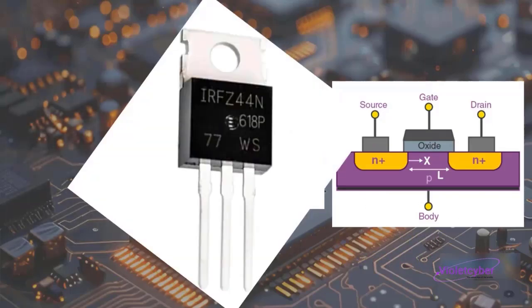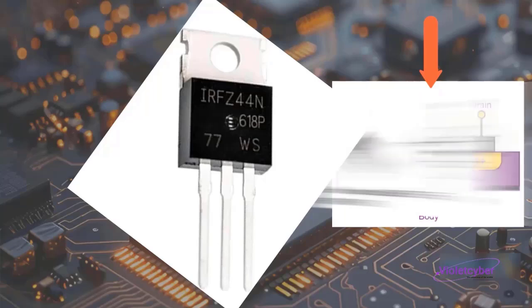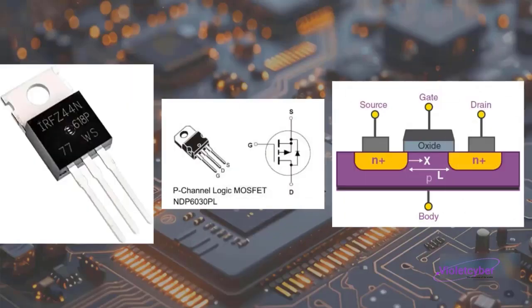MOSFETs come in their standard packages with three pins named gate, drain, and source. The gate pin is the activation pin of the MOSFET. By applying a small pulse or voltage to the gate, the MOSFET gets activated.